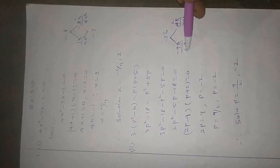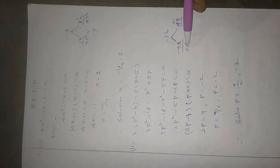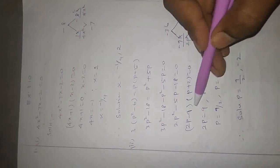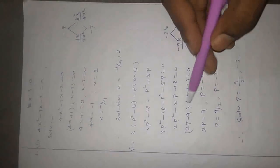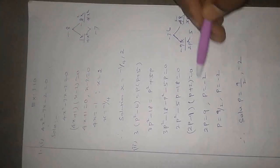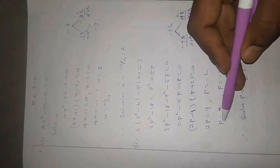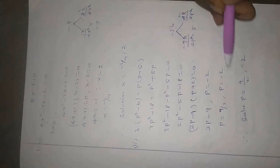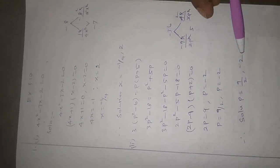Possible numbers that multiply to minus 36 and add to minus 5: minus 9 and plus 4 — since 9 times 4 are 36, and minus 9 plus 4 equals minus 5. So we get 2p minus 9 into p plus 2 equals 0. Solving: 2p equals 9, so p equals 9 by 2; and p plus 2 equals 0, so p equals minus 2. Therefore, the solution p equals 9 by 2 comma minus 2.